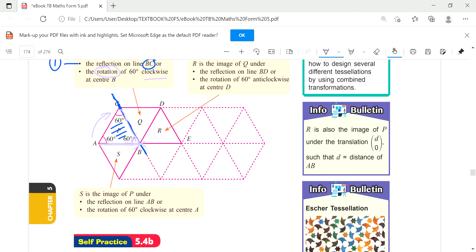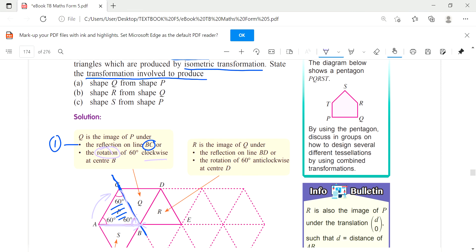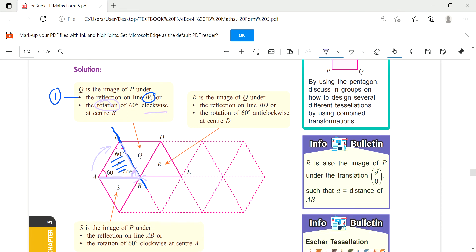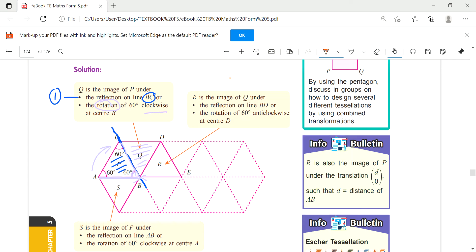And then R from shape Q. R is the image so Q is the object. So once again it is reflection under BC - yeah sorry, BD, BD here.